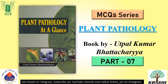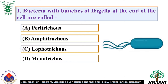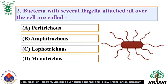Question number 1: Bacteria with bunches of flagella at the end of the cell are called. The correct answer is option C — Lophotrichous. For example, Pseudomonas fluorescens. Question number 2: Bacteria with several flagella attached all over the cell are called. The correct answer is option A — Peritrichous. For example, E. coli.